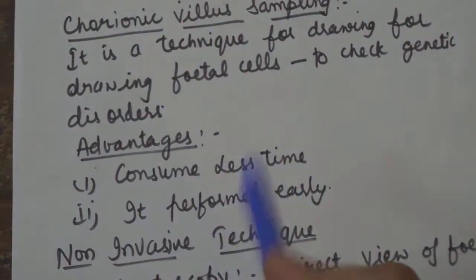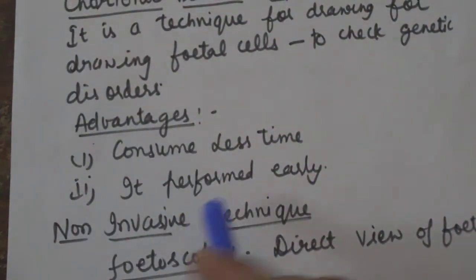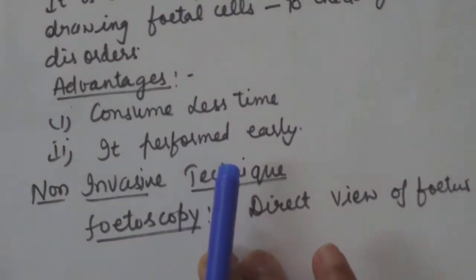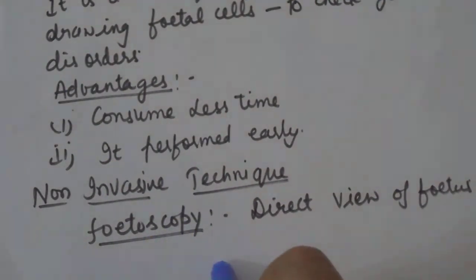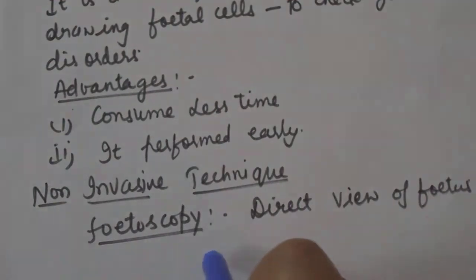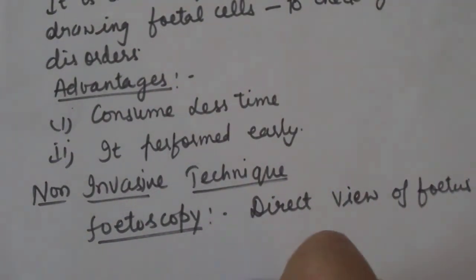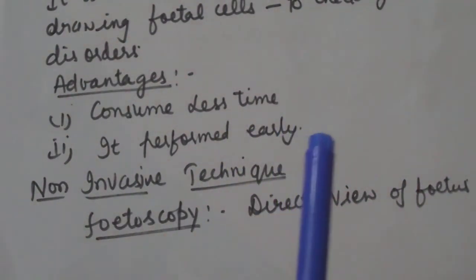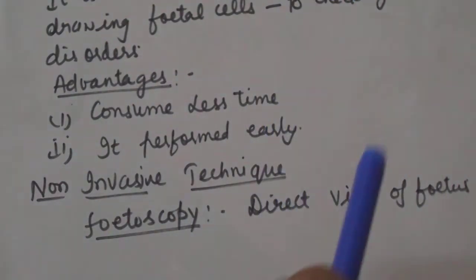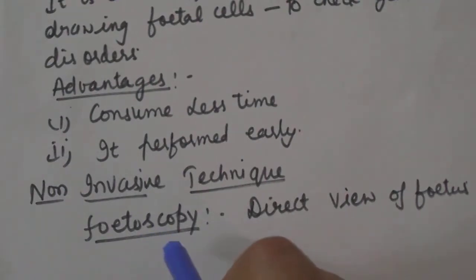Non-invasive techniques are those techniques available to determine fetal conditions. One of these is ultrasound imaging, also known as fetoscopy. Fetoscopy is a technique used by the doctor to have a direct view of the fetus. A thin tube containing a viewing scope is inserted through the vagina and cervix into the uterus to directly view the fetus.